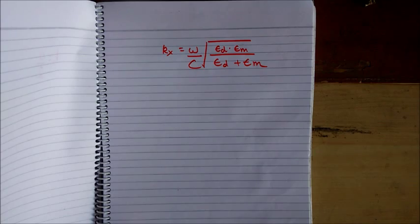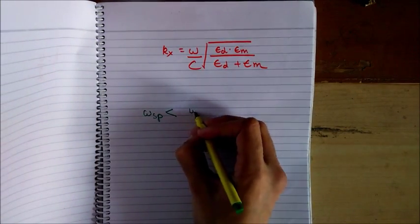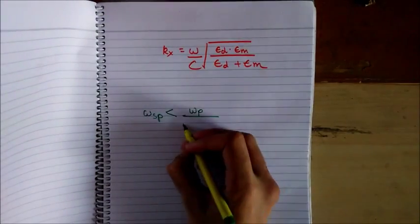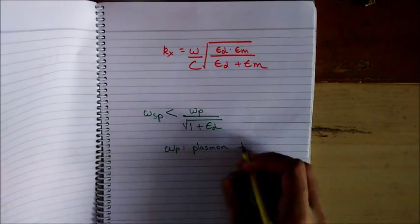Also, the range of frequencies at which we can observe the surface plasmon is between omega p divided by 1 plus epsilon d under root to omega p where omega p is the plasma frequency.